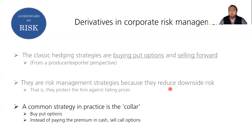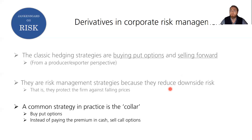A third strategy is the collar: you buy put options but don't finance them with cash upfront. Instead, you sell call options so that you're on the receiving end of the premium, which you use to purchase the put options. Usually they're constructed to be zero cash cost — meaning no cash changes hands — you sell just enough call options to be able to buy the put options.